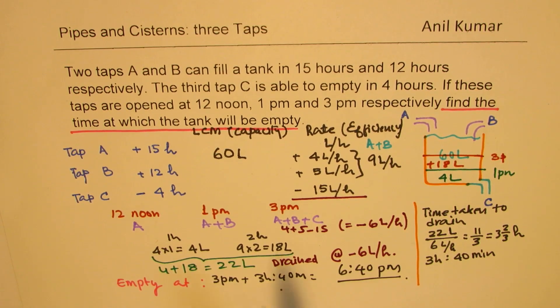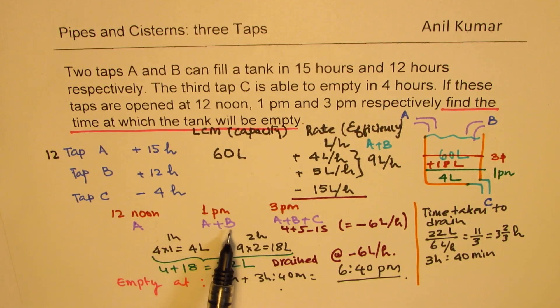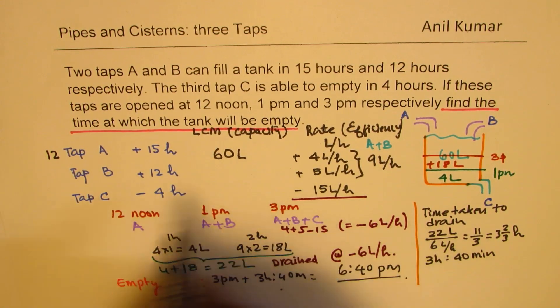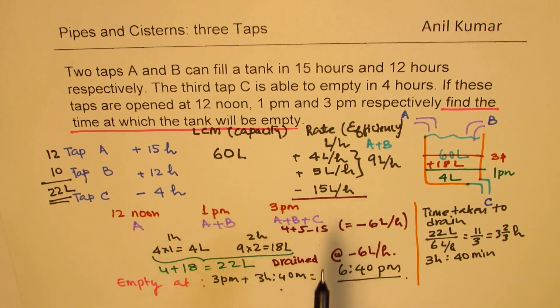So that is how we are going to solve it. The idea here is that tap A works from 12 to 3, that means 3 hours. It contributes at the rate of 4 liters per hour, 12 liters. Tap B works for 2 hours from 1 to 3. So it contributes 5 times 2, 10 liters. And total we have 22 liters. And this 22 liters is drained effectively at 6 liters per hour when all 3 are on. So divided by 6 gives us the time required to drain it after 3 p.m. So after 3 p.m. it further takes 3 hours and 40 minutes to drain. And so the tank will be empty at 6 hours 40 minutes.